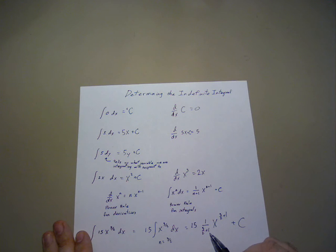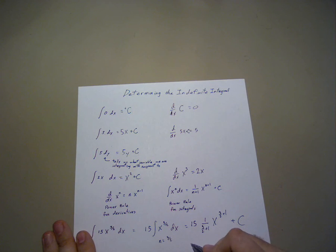3 over 2 plus 1, that's the same as 5 over 2, so 15 times 1 over 5 over 2, x to the 5 over 2 plus c.